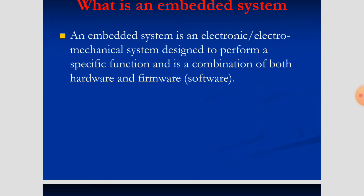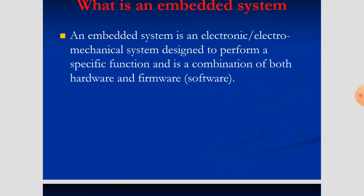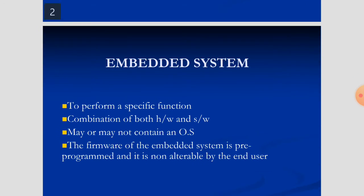An embedded system is mainly designed to perform a specific task only; it is not used for general tasks. For example, a washing machine is designed only to wash clothes. You can't use it as a fridge. Similarly, you can't use an embedded system for general purposes — you design it for a specific task.